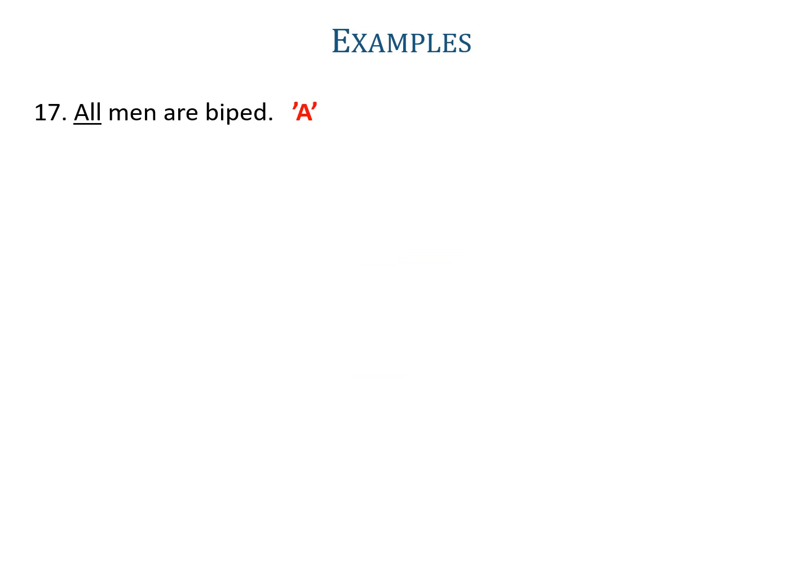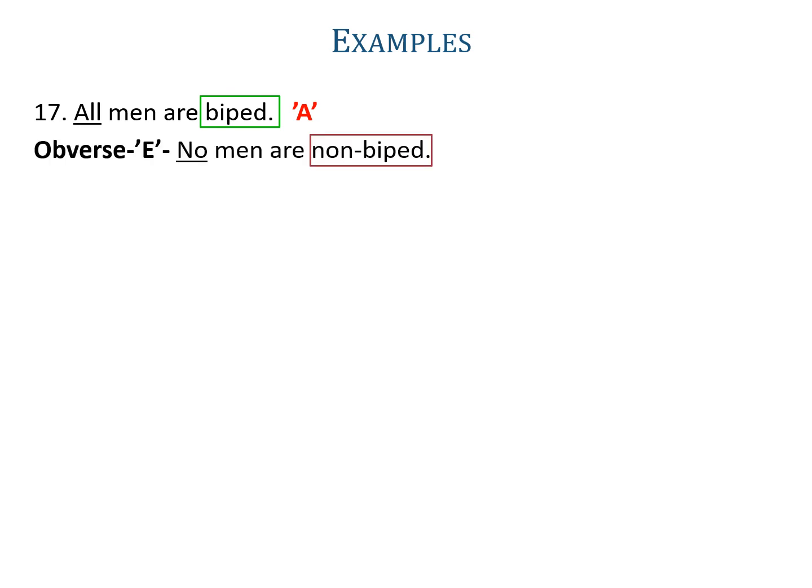Example seventeen: 'All men are biped.' All is used, so it is an A-proposition. Its obverse is E, and the predicate is biped. The symbolic form will be 'no S is non-P', so the obverse will be 'no men are non-biped'.